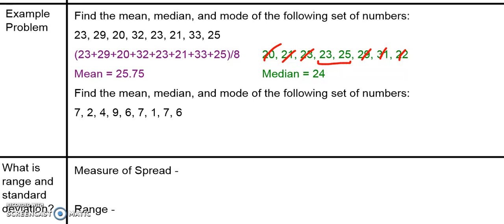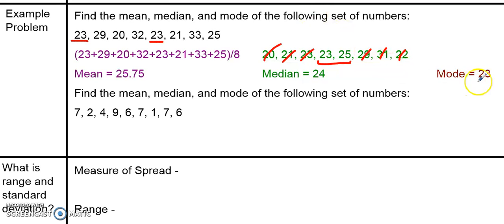Now the last thing we have to find is the mode. Remember, the mode is the most common or most frequent value in our data set. Looking at this, it looks like every data point happens only once — but if you look carefully, there are actually two 23s, and no other values appear twice. So 23 is the most common, making 23 our mode.